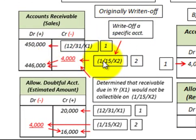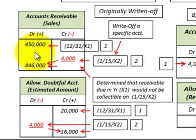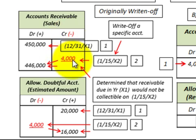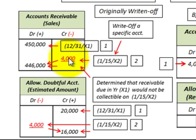On 1/15/X2, we determined there was a $4,000 bad debt in our accounts receivable from a particular customer that was no longer recoverable. Using the allowance method, we credit accounts receivable for $4,000, and the debit goes to the allowance for doubtful accounts for $4,000. Note that the allowance for doubtful accounts is a contra-account to accounts receivable.